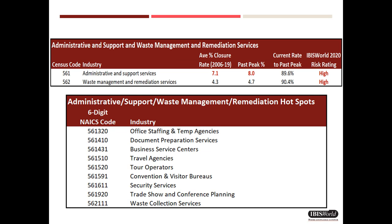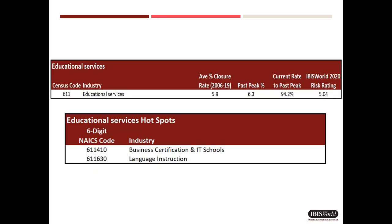Administrative and support and waste management and remediation services have some of the highest rates of business failures. As you can see from the lower table, the hotspots most at risk are either dependent on commercial office expenditures or travel and tourism. As for educational services, their historical closure rates aren't particularly high. However, business certification and IT schools, plus language instruction facilities, will likely suffer the greatest casualties.